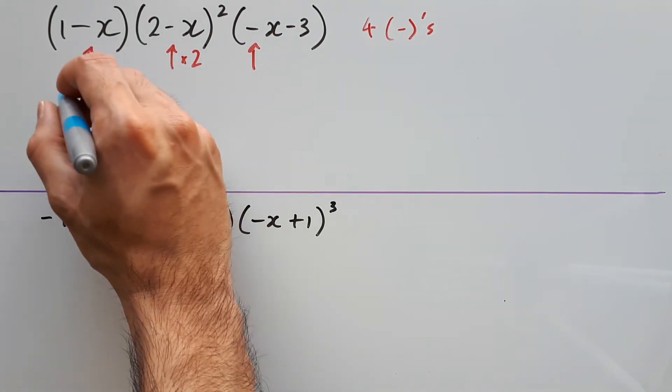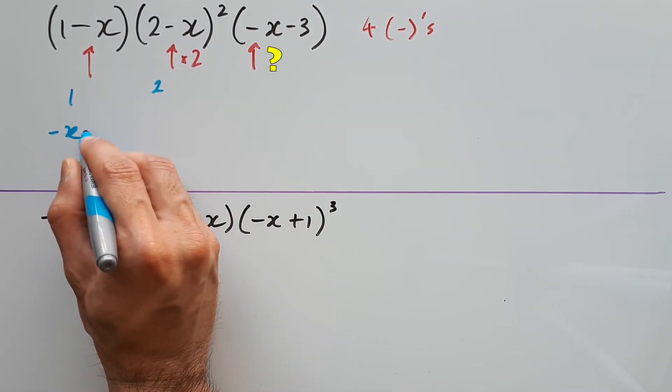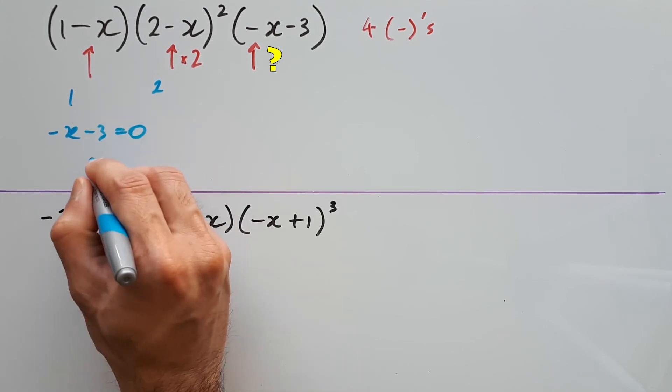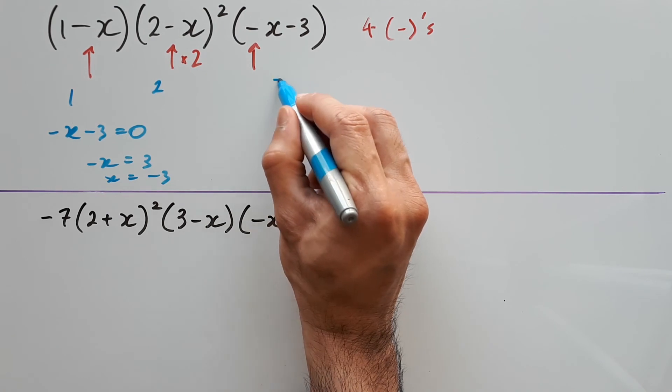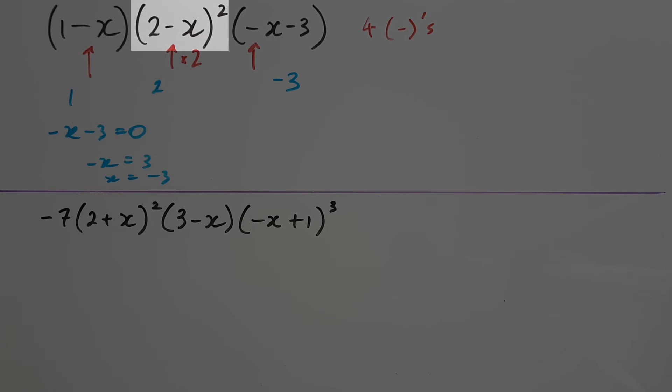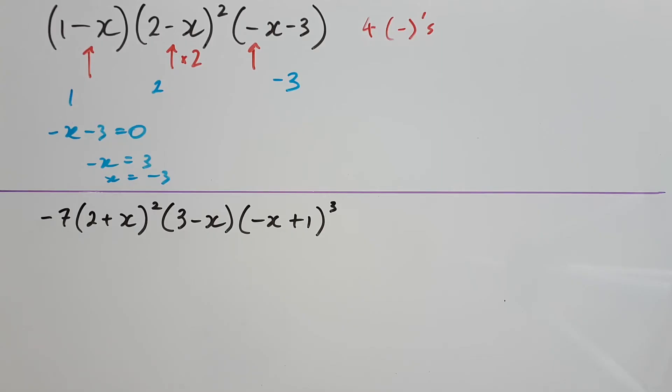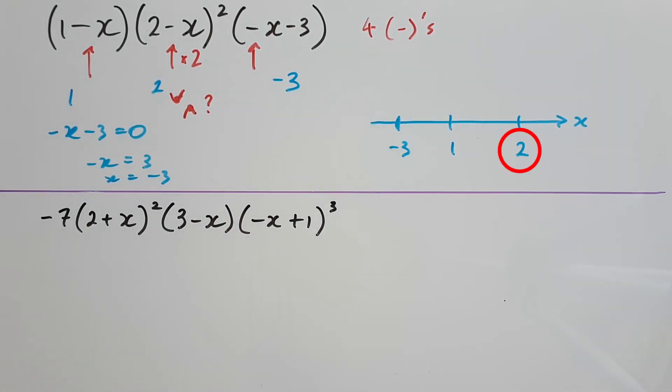Our x-intercepts are 1, 2, and possibly 3 or negative 3. If you want to be sure, then just solve negative x minus 3 equal to 0 for x, and you will find that x is negative 3. So the tricky one here to look out for is the middle factor, because that is to the power of 2, meaning it's going to have some kind of parabolic intercept. It just so happens that 2 is the rightmost intercept on our x-axis, and it needs to finish upward through it, so it's going to do an upward smiley face parabola.